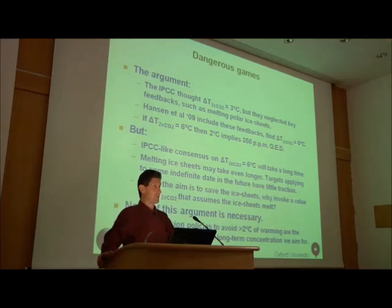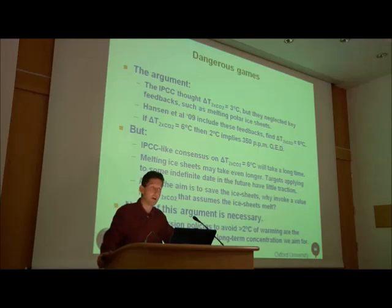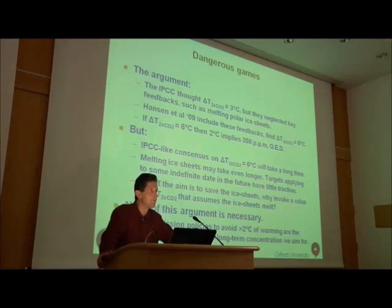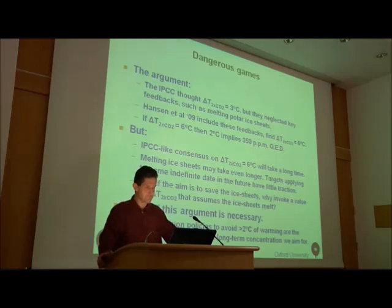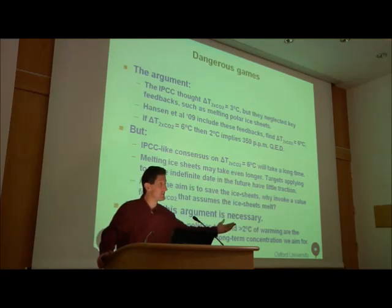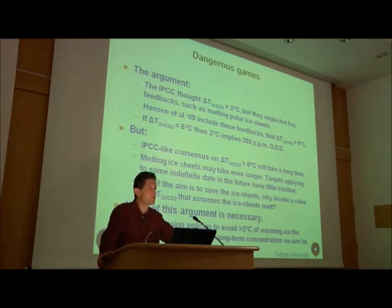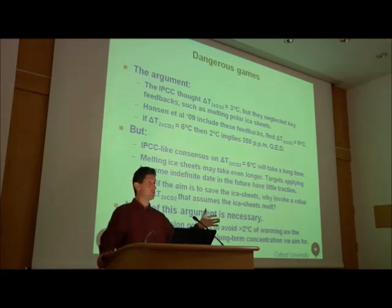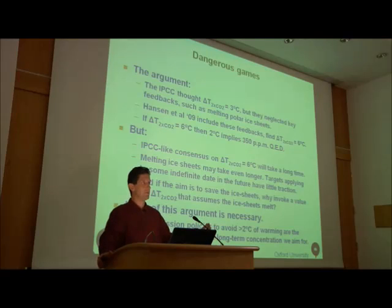There are lots of problems with this. First of all, to get an IPCC-like consensus that the climate sensitivity is 6 degrees will, I assure you, take a long time. Jim Hansen will say that's because the IPCC is populated by dinosaurs like myself who take a lot of convincing — but I don't think I'm the only dinosaur on this one. Melting ice sheets for this 6-degree sensitivity to manifest itself may take even longer, so your targets apply to some indefinite state in the future. And there's a fundamental logical problem: if the aim is to save the ice sheets, then why use a climate sensitivity value which assumes the ice sheets melt? You don't have to be Bjorn Lomborg — I don't think he's spotted this one yet, but he probably will.